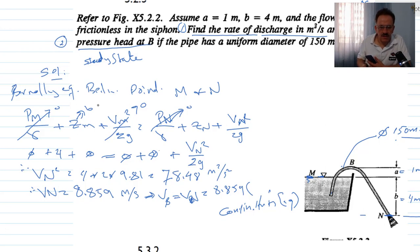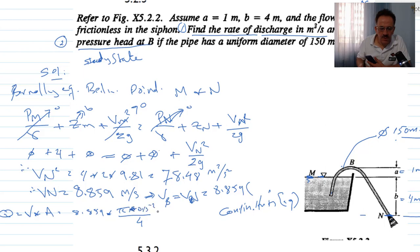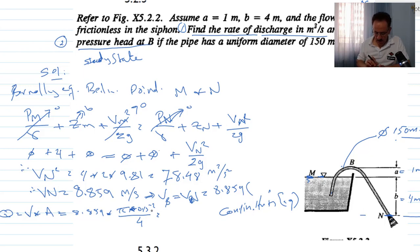This satisfies the first requirement. For the second requirement, Q equals velocity times area. Velocity equals 8.859 meters per second, and area equals pi over 4 times 0.15 squared, giving the discharge Q.